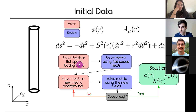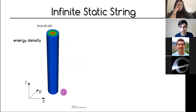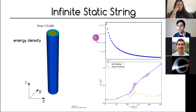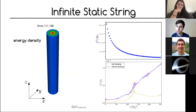Once we have the solution we load it into our 3+1 code. The energy density of the infinite static string shows periodic boundary conditions along the z direction and nothing is happening — which is good, because if it's static that's exactly what should happen. We can quantify this by checking the Hamiltonian constraint, which stays at about 10^-8 and remains stable. The Gauss constraint is also stabilized by our damping formalism.